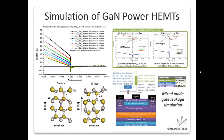Gallium nitride power HEMT is considered a next generation power device. With 20 years of experience with compound semiconductors, CrossLite software is highly capable of simulating gallium nitride power HEMT devices. Shown here is the conduction band with two-dimensional electron gas, and the gallium nitride structure with mixed mode simulation of gate leakage current. We already have quite a few publications in ISPSD and EDL.